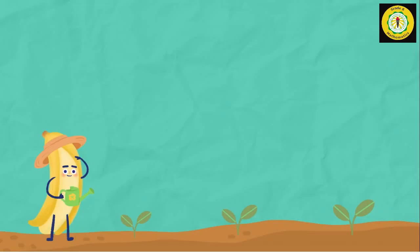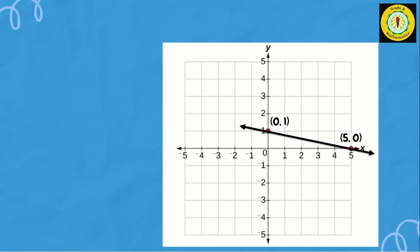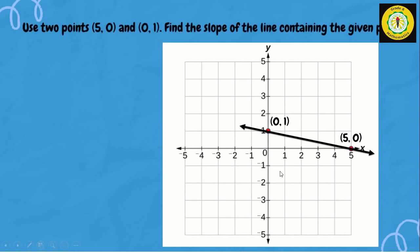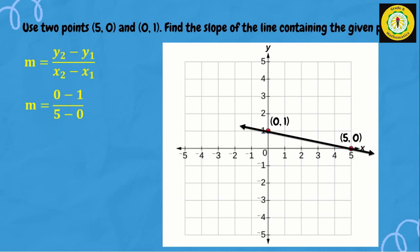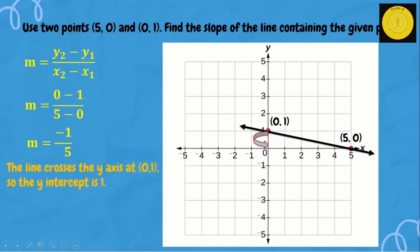Now let's discuss graphing a linear equation in two variables. First method: given two points. For example, use the two points (5, 0) and (0, 1) to find the slope of the line. Using the formula m equals y₂ minus y₁ over x₂ minus x₁, we substitute: y₂ is 0, y₁ is 1, x₂ is 5, x₁ is 0. Simplifying: 0 minus 1 is negative 1, and 5 minus 0 is 5, so the slope is negative one-fifth.